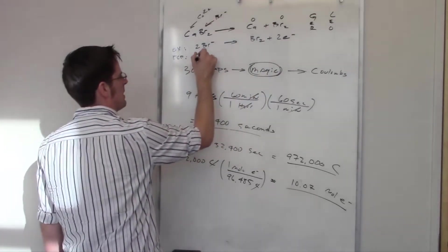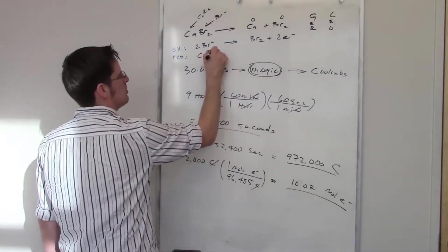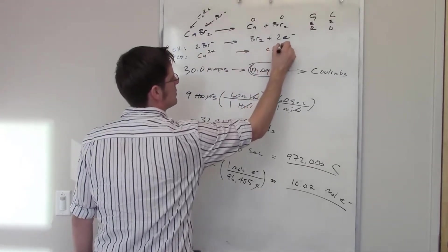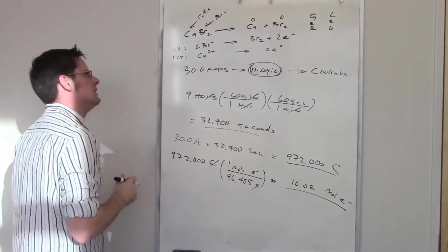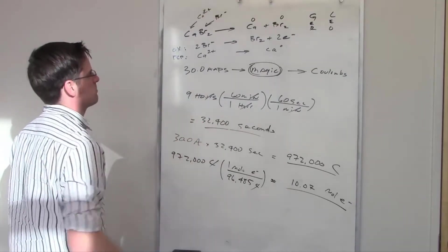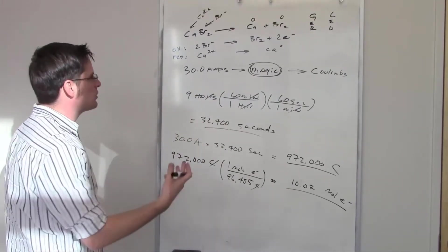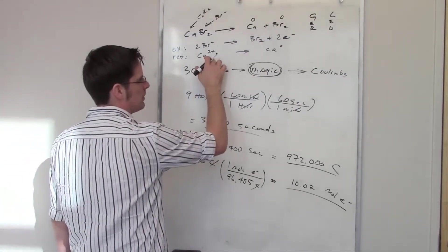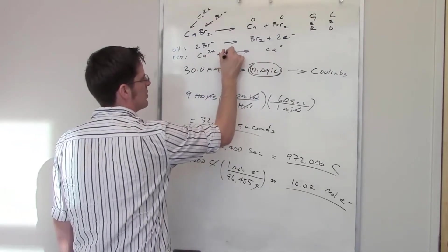We've got a negative two total on the left, negative two on the right. Now I've got separately my reduction: I've got Ca²⁺ doing some stuff to turn into Ca⁰. Balance-wise, that's pretty good. I have to throw some electrons down though to get the charge to balance.